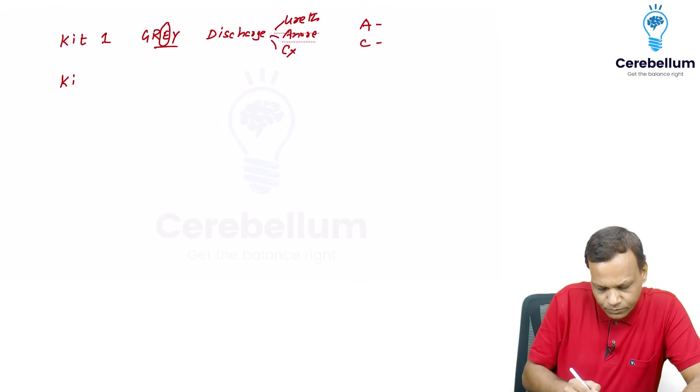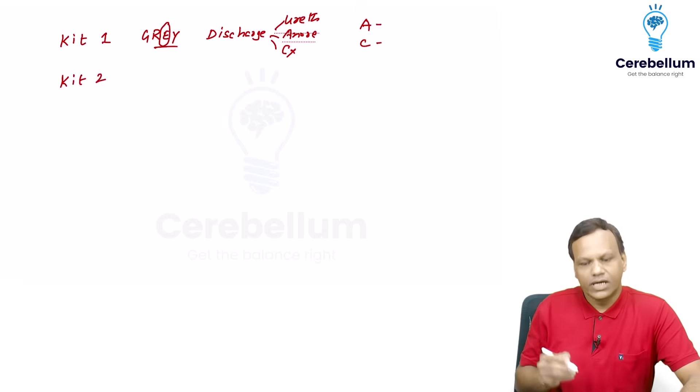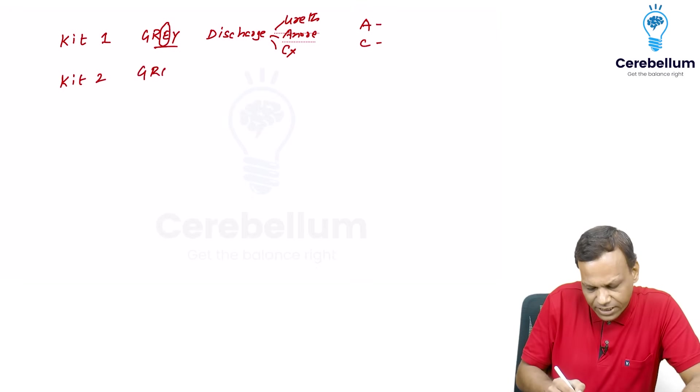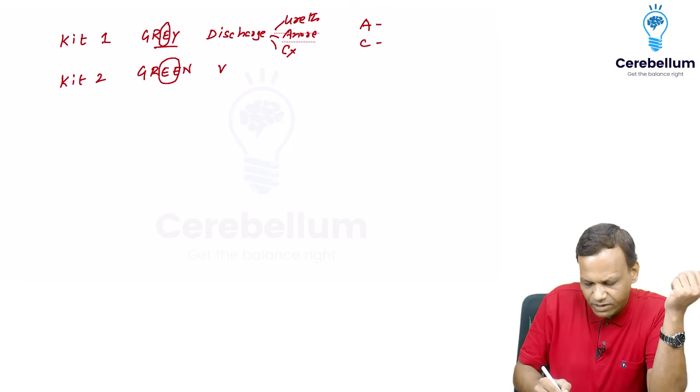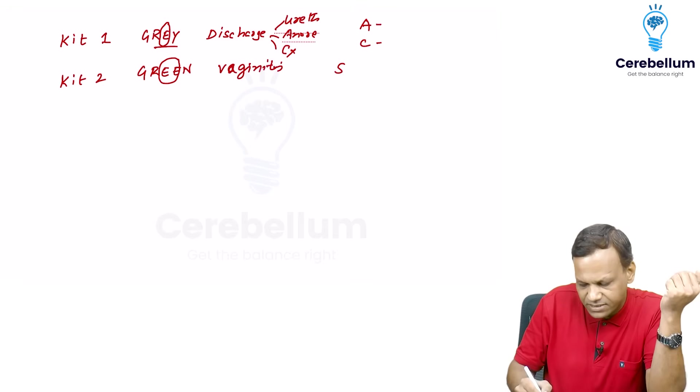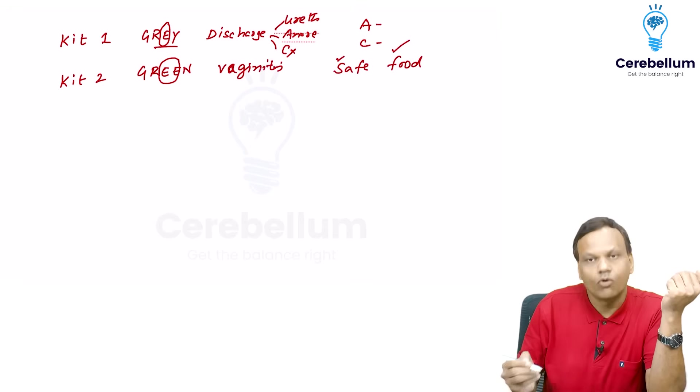Then kit 2. Kit 2 is green. So green has two E's, so it is kit 2. And we eat green vegetables. So green vegetables. Green vegetables means vaginitis. Vaginitis or vaginal discharge. And green vegetables are safe food. So it contains secnidazole and fluconazole.